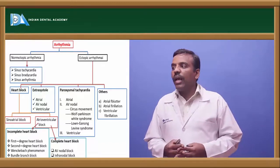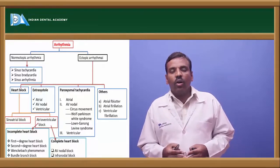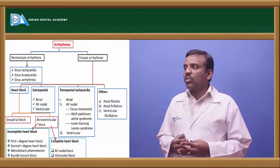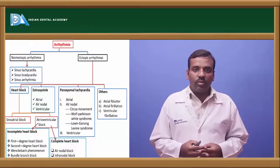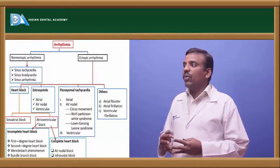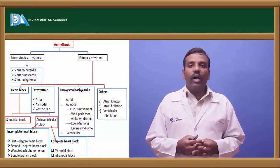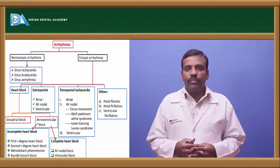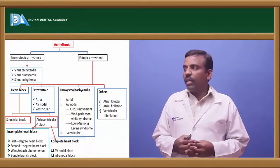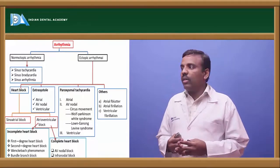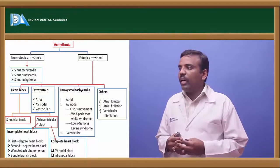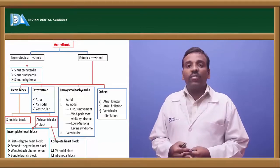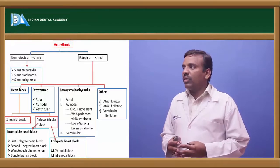Extrasystole occurs when after a systole another systole continues. It is due to atrial extrasystole, AV nodal extrasystole, and ventricular extrasystole. Paroxysmal tachycardia is caused by atrial paroxysmal tachycardia, AV nodal tachycardia, and ventricular tachycardia. Other causes include atrial flutter, atrial fibrillation, and ventricular fibrillation.